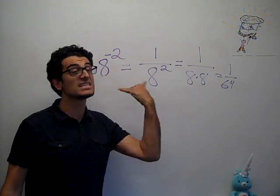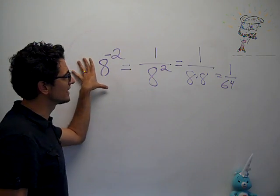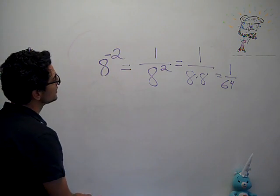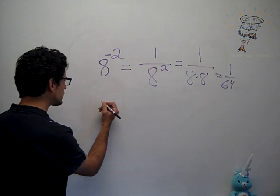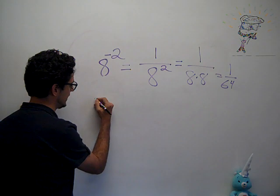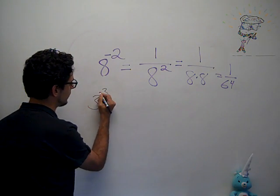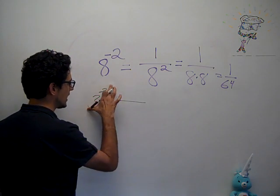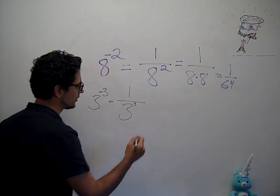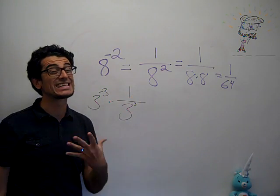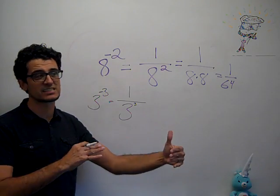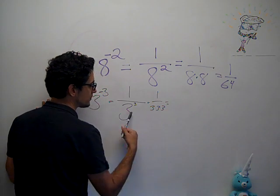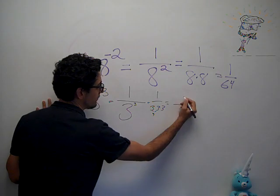So 8 to the negative second is not negative 64. No! What 8 to the negative second really is, is 1 over 64. That is the idea. So let's say I have another example—let's say 3 to the negative third power. Being a negative exponent, we just discussed that what this means is it becomes 1 over 3 to the third. This is now a fraction, it's less than 1. So I rewrite this as 1 over 3 times 3 times 3, which gives me—3 times 3 is 9 times 3 is 27. So I have 1 over 27.